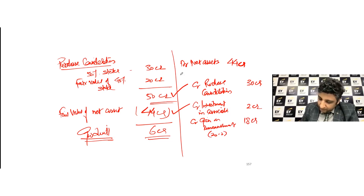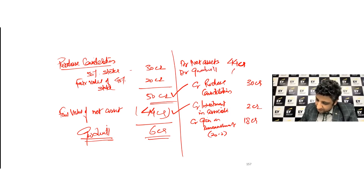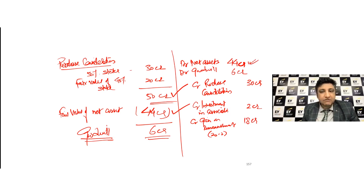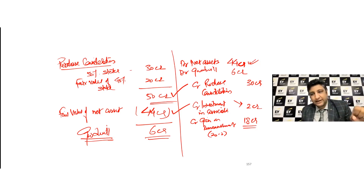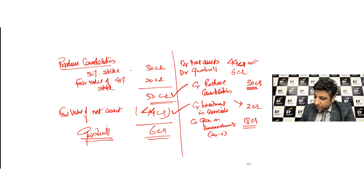At the group level, you consolidate ₹44 crores of net assets. The initial investment of ₹2 crores is de-recognized since it is no longer a non-controlling scenario. Since it is remeasured at fair value, the gain — the difference between fair value and carrying value — is recognized at this point. The total consideration for the additional stake of ₹30 crores results in a goodwill of ₹6 crores to be recognized by the acquirer.